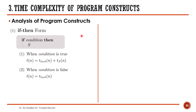The first type will be a single if statement that does not have an else part, and the second type will be an if-then-else statement. For the single if statement, it consists of a condition followed by a statement. If the condition is true, then the time complexity is equal to the time spent executing the condition, which is considered equal to one unit of time, plus the time spent executing the statement.